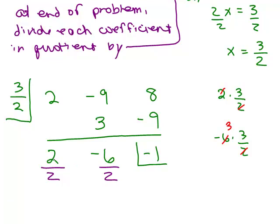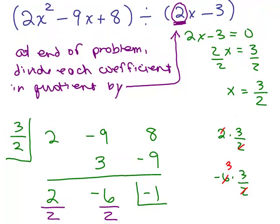So the coefficient for the x term is 1, right? So it's 1x. So our answer is going to be x minus 3 plus negative 1 over what I divided by. Now go back. What was the original problem you were dividing by? It was 2x minus 3, right? That was the actual problem, 2x minus 3.